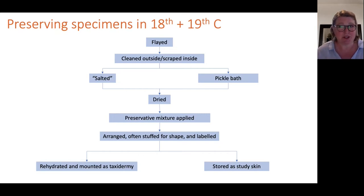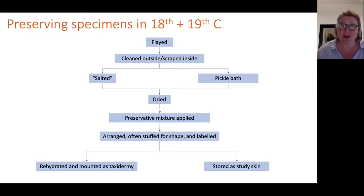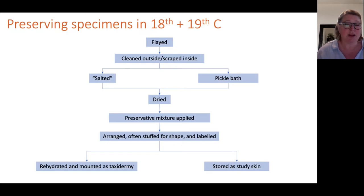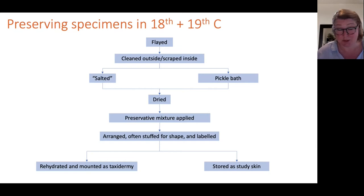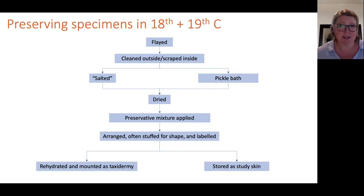Methods of applying preservatives varied by cultural group and over time. A flow chart shows the most common methods documented during the 19th century when Australian specimen collecting was in its heyday. After flaying and cleaning, the skin was either dry salted or put in a pickle bath, left to air dry, and then a preservative mixture was applied. The skin was arranged — sometimes left foot over right to show gender — stuffed to give it shape, then labelled. Sometimes many hundreds of years later, the skin would be rehydrated and mounted as taxidermy, or stored as a study skin for research.